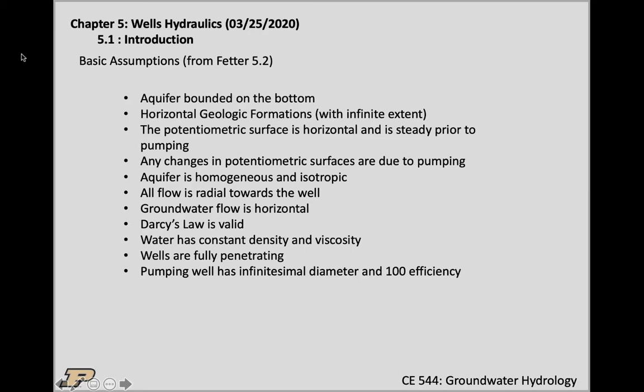So aquifers are bounded at the bottom — they're not bottomless. There is some sort of an end; at the end of the formation there's an aquiclude somewhere so that they have a finite depth. The geological formations are horizontal and the piezometric surface before we start pumping is also horizontal and steady. The changes in the potentiometric surface are due to pumping for this chapter. The flow is radial towards the well — the flow is coming from all directions towards the well, and again this is the object of today's lecture, at least half of it.